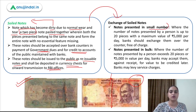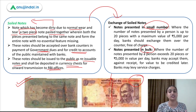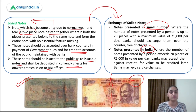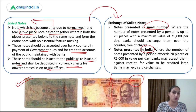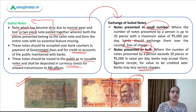For exchanging soiled notes, there are two cases: small numbers and bulk. If the number of soiled notes does not exceed 20 pieces and the maximum value is not more than 5,000 rupees, you can exchange them over the counter at a bank. If the number exceeds 20 pieces or the value exceeds 5,000 rupees, the bank may not exchange over the counter but will accept them, provide a receipt, and later credit the amount to your account. Small number exchanges are free of charge, while bulk exchanges may attract a service charge.